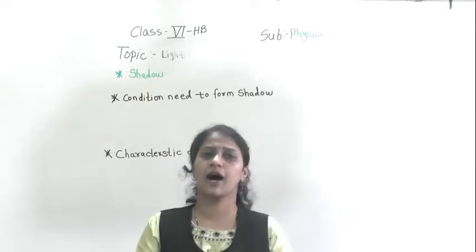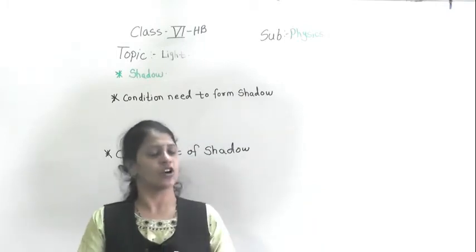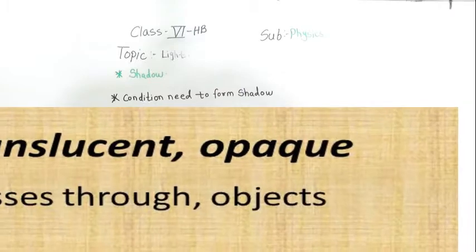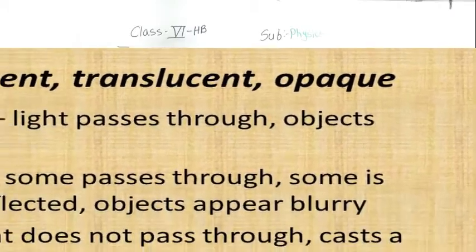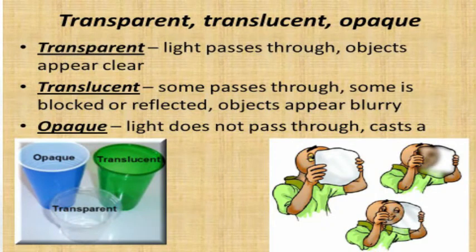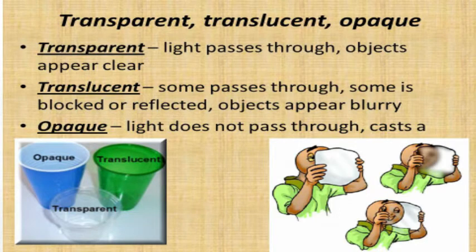We discussed that the transmission of light takes place through three types of medium: transparent, translucent, and opaque. Transparent means the material through which light can pass — it allows light to pass through it. For example, glass and clear air are examples of transparent objects.